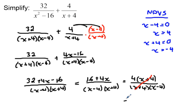And I arrive at my final answer of 4 over x minus 4. And I'd need to state my NPVs as restrictions and say x cannot equal positive or negative 4.